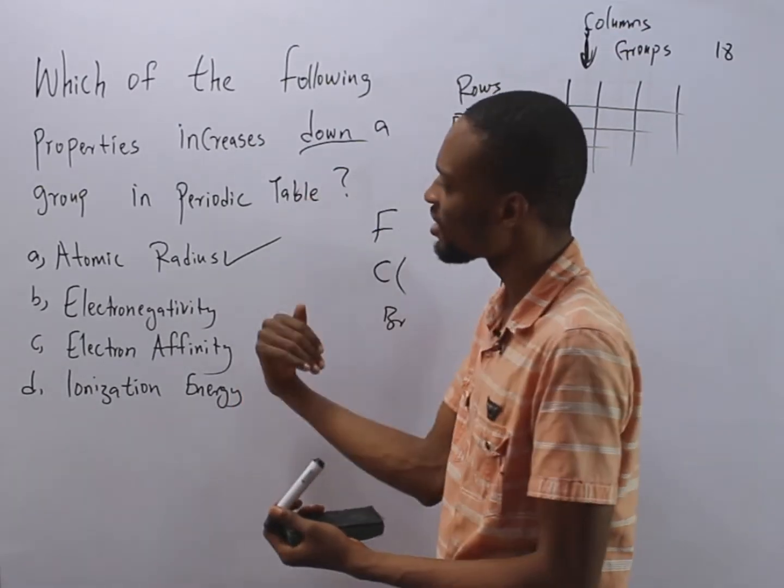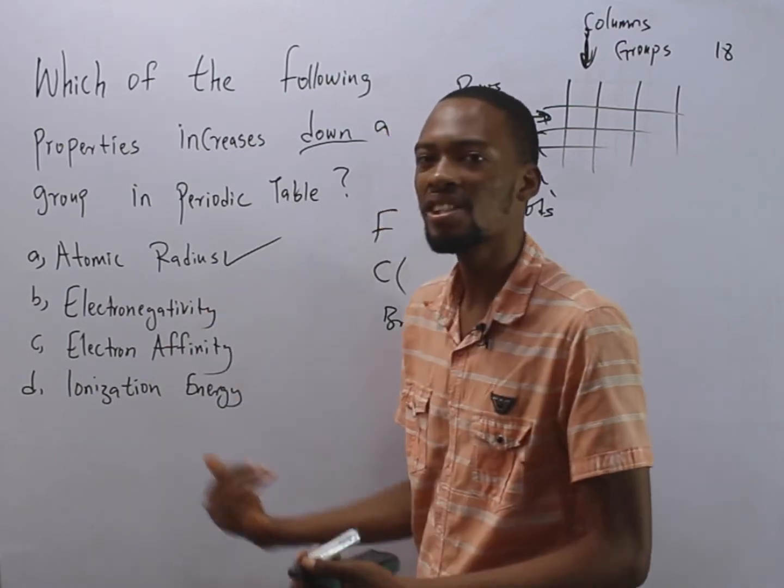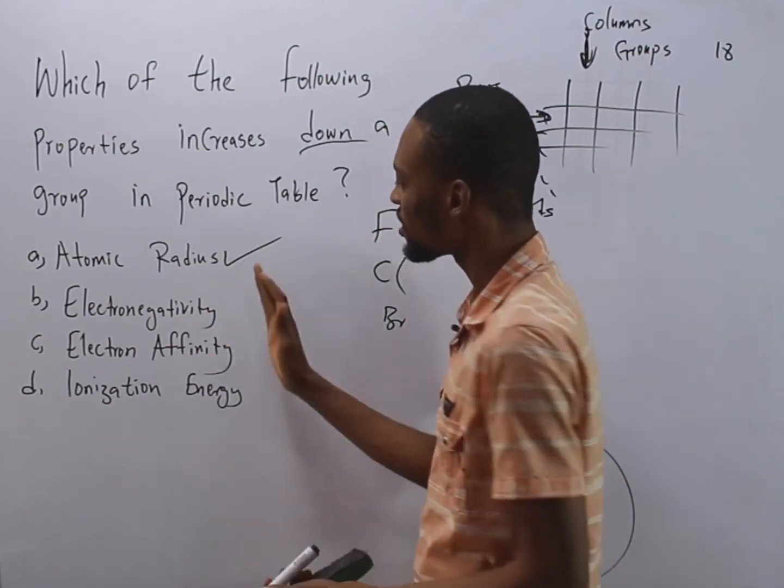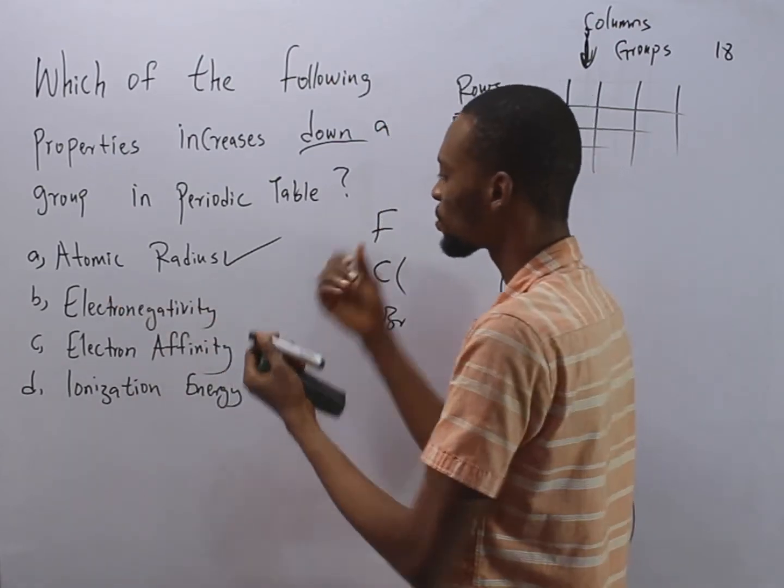Electron affinity decreases down the group. Ionization energy decreases down a group. So this decreases, this decreases, this decreases. Meanwhile, atomic radius increases down a group.